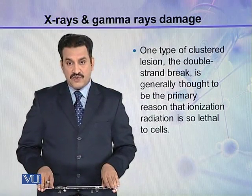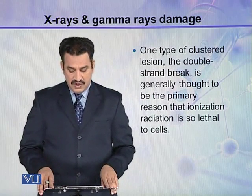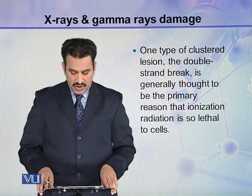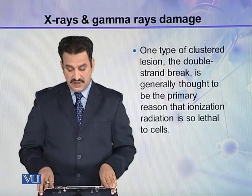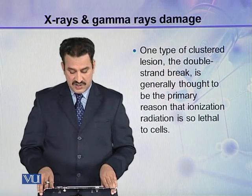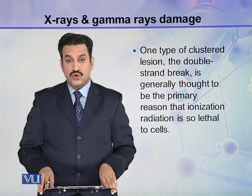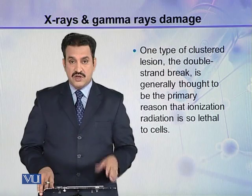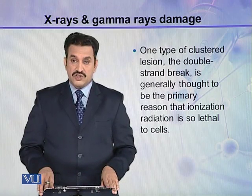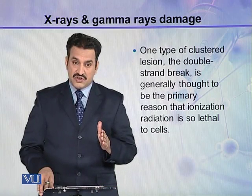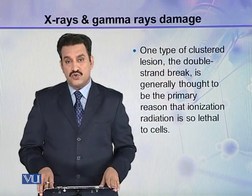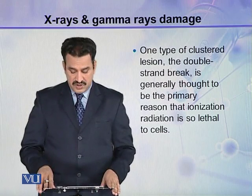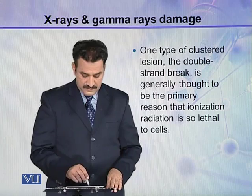One type of clustered lesion, the double strand break, is generally thought to be the primary reason that ionizing radiation is so lethal to cells. As already mentioned, this double strand break is very difficult to repair, and so it becomes lethal to the cells.